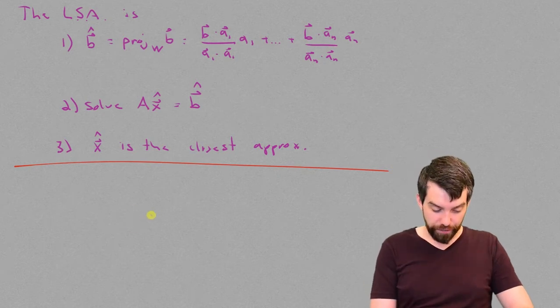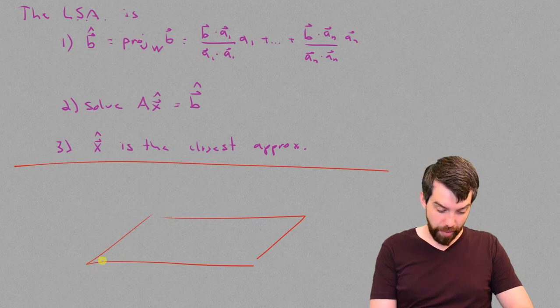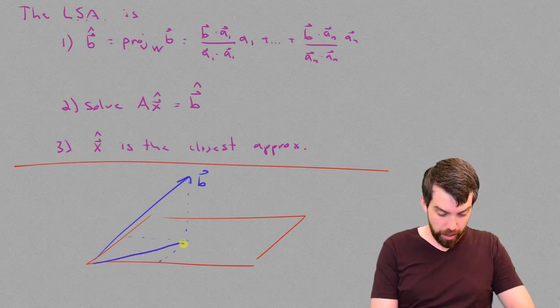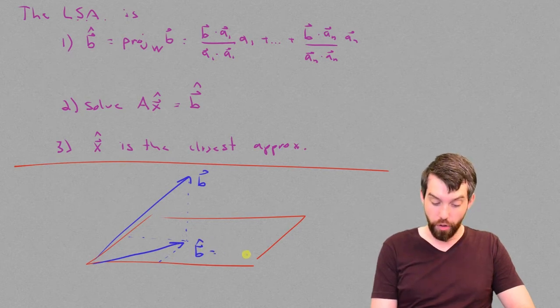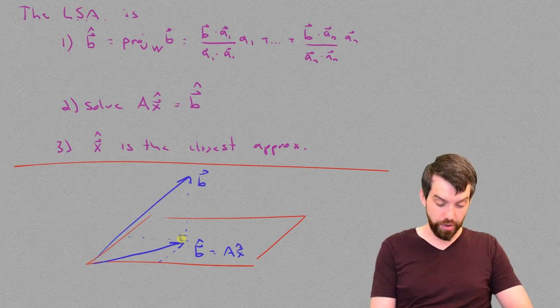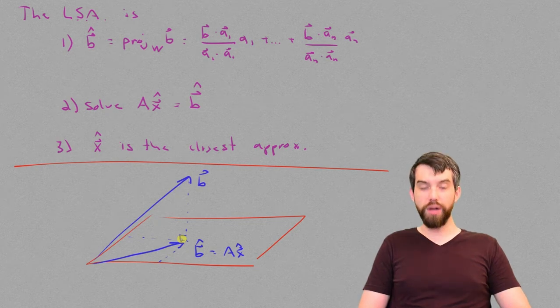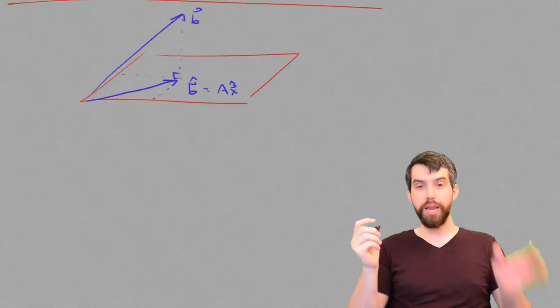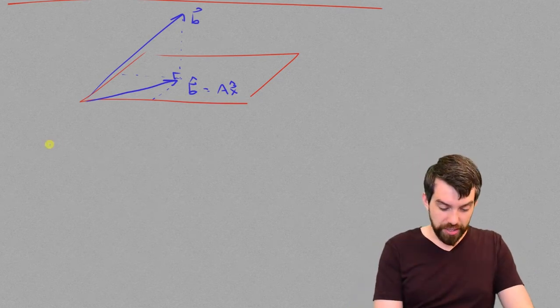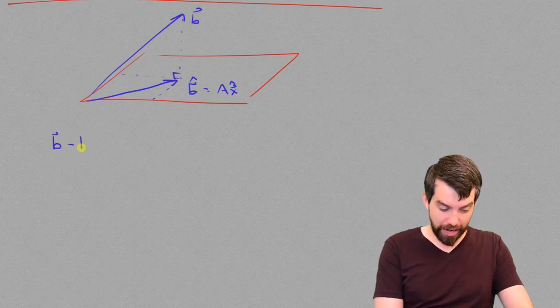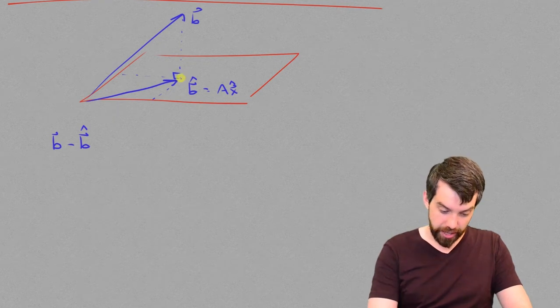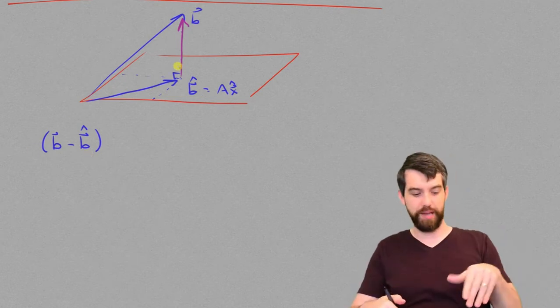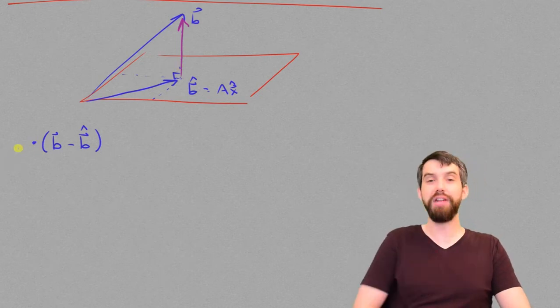The key observation is the following: If I begin with my vector b that lives up here and conduct an orthogonal projection down here, I get a vector b̂, which we can solve as Ax̂. So I have this 90-degree angle between these two different vectors. Because this was an orthogonal projection, if I take the vector b and subtract off b̂, that difference is this vector going up here. This particular vector, because it points orthogonally away from my subspace,